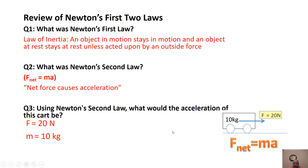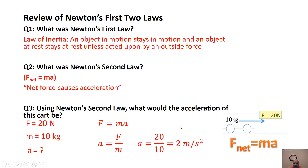The 20-newton force acts on a 10-kilogram cart and we're solving for acceleration. Since there's a single force, I'll say F = ma. We rearrange to solve for acceleration: a = F/m. Plugging in 20 for force and 10 for mass, we get 2 meters per second squared.